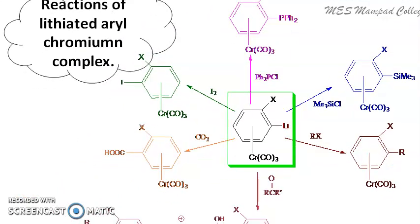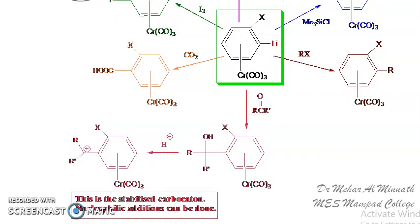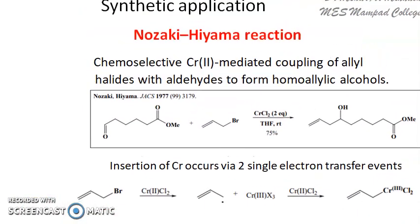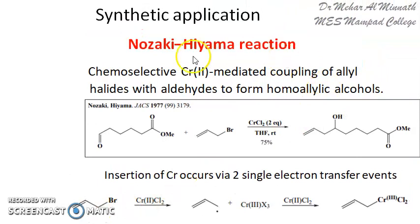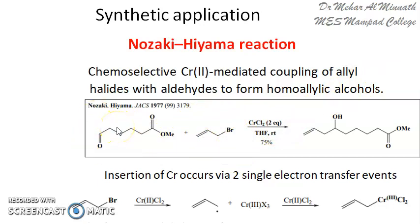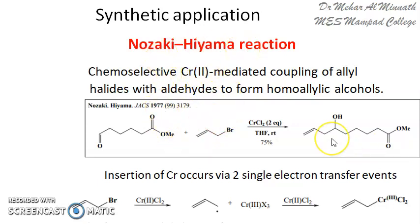We will now discuss a few name reactions of chromium complexes. The first is the Nozaki–Hiyama reaction — also known as the Nozaki–Hiyama–Kishi reaction. The Nozaki–Hiyama reaction is a chemoselective coupling reaction of an allyl halide with an aldehyde, mediated by a chromium complex. It is chemoselective: in a substrate bearing both a keto group and an aldehyde, the reaction occurs only at the aldehyde carbonyl, leaving the keto group untouched.